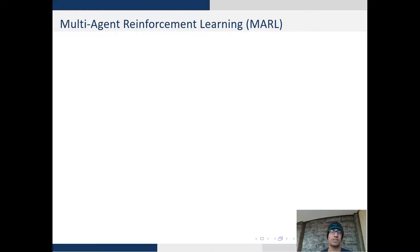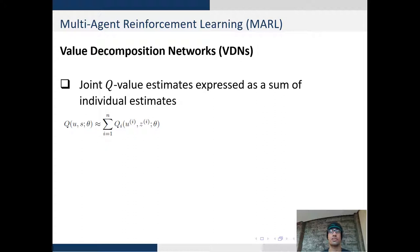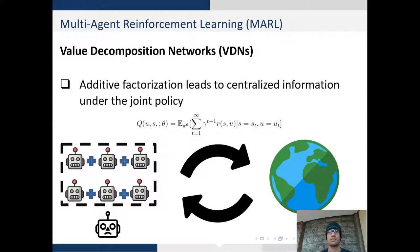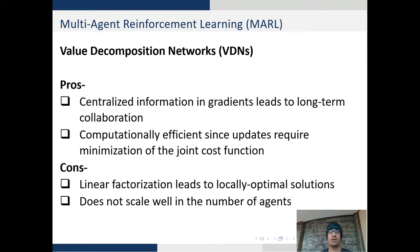To address these problems in independent Q-learning we look at value decomposition networks which factorize the Q-values of each agent into a joint Q-value. The assumption is that the joint Q-value can be approximated as the summation over all Q-values of agents. This is an additive factorization and leads to centralized information under the joint policy.